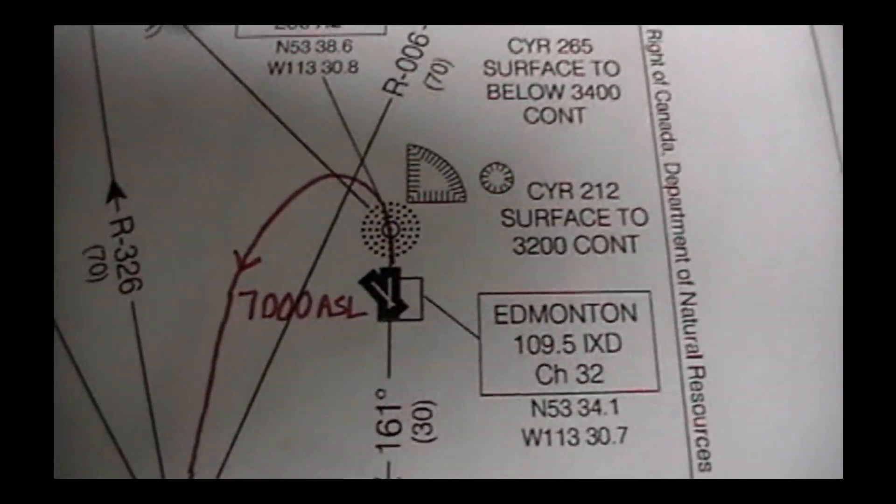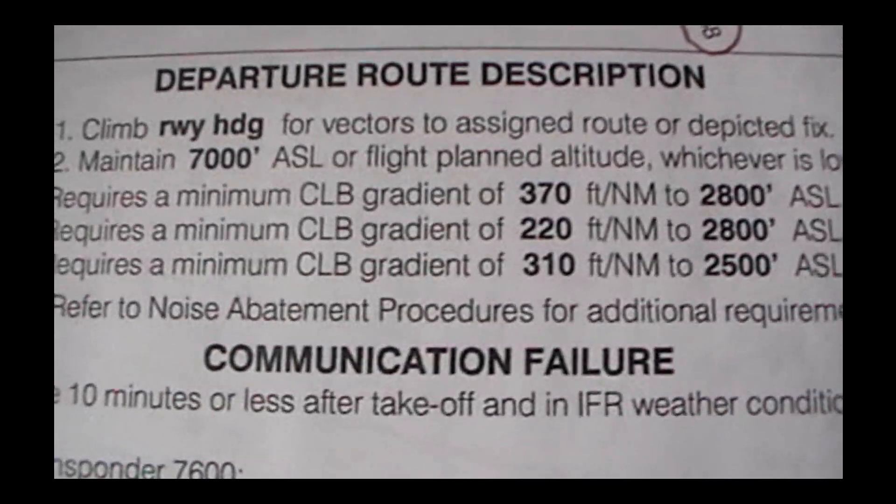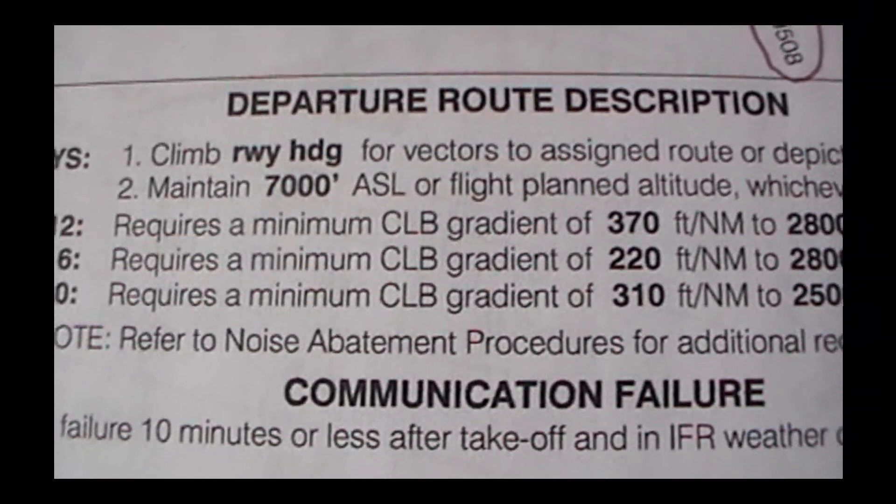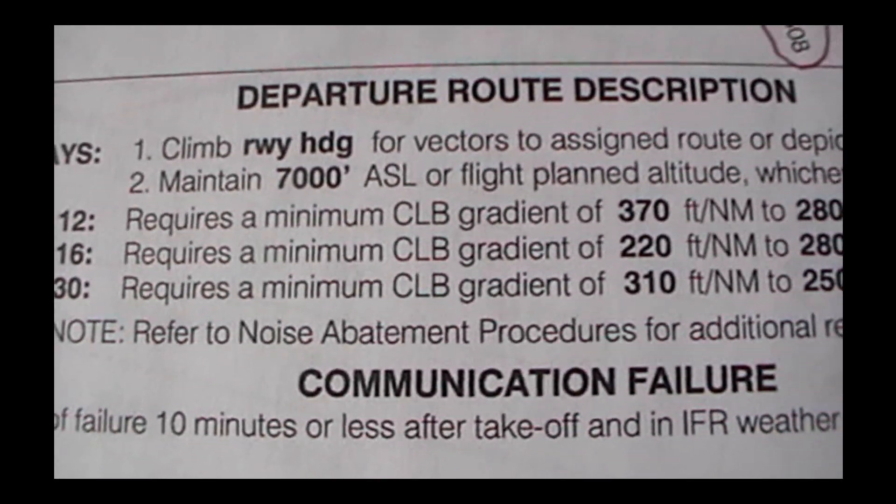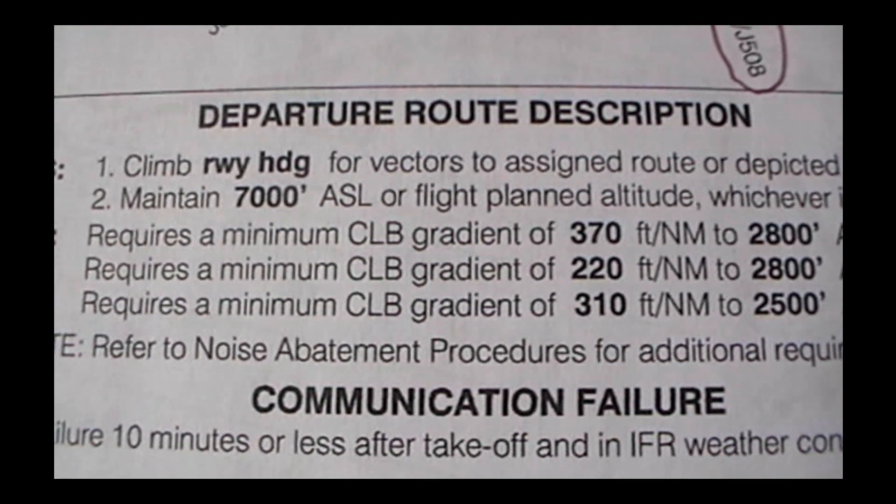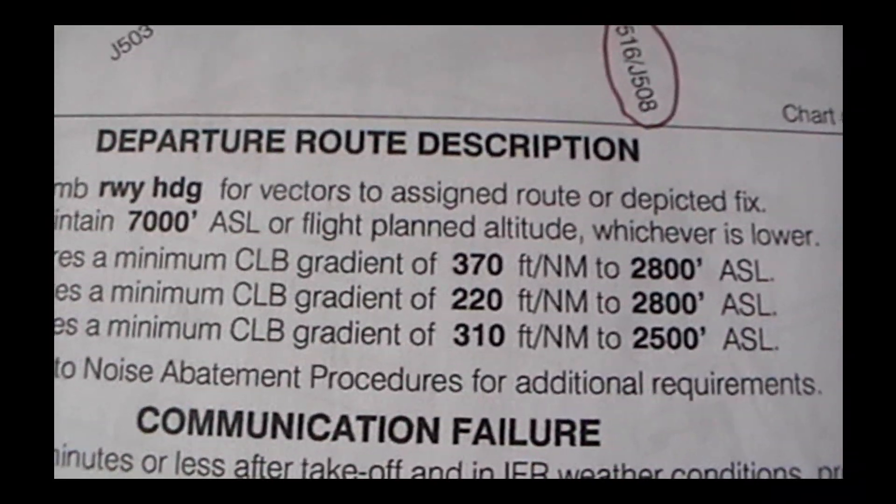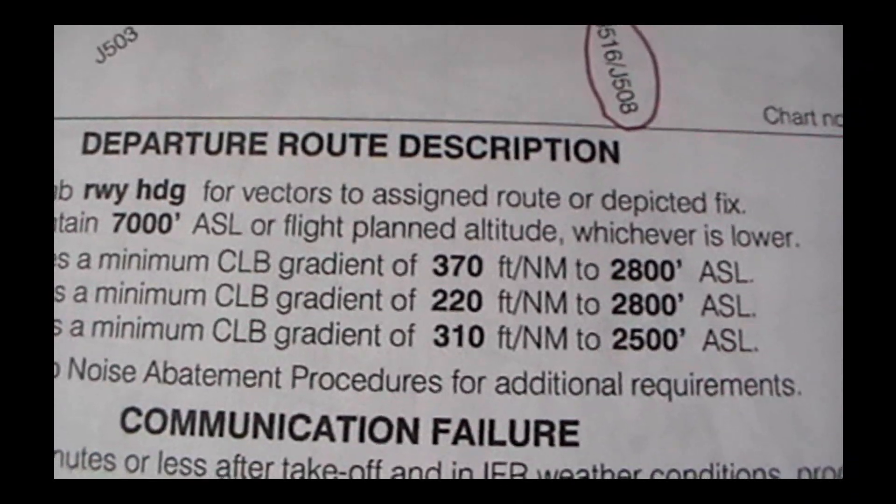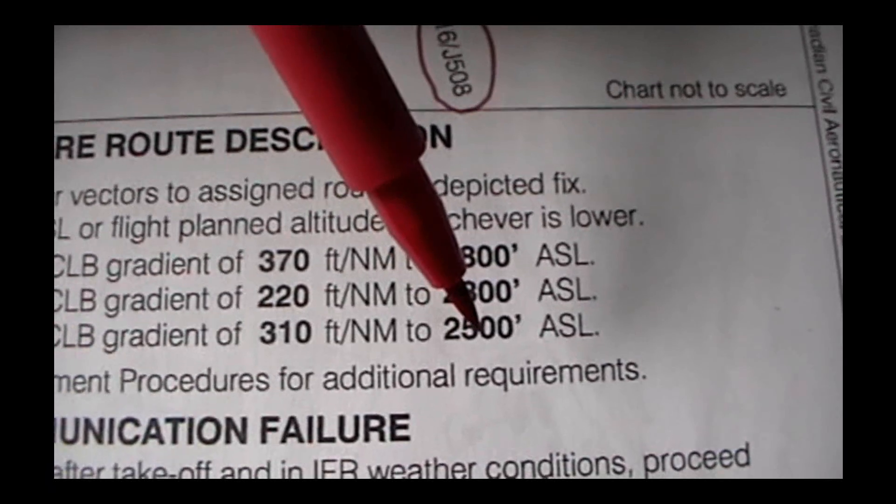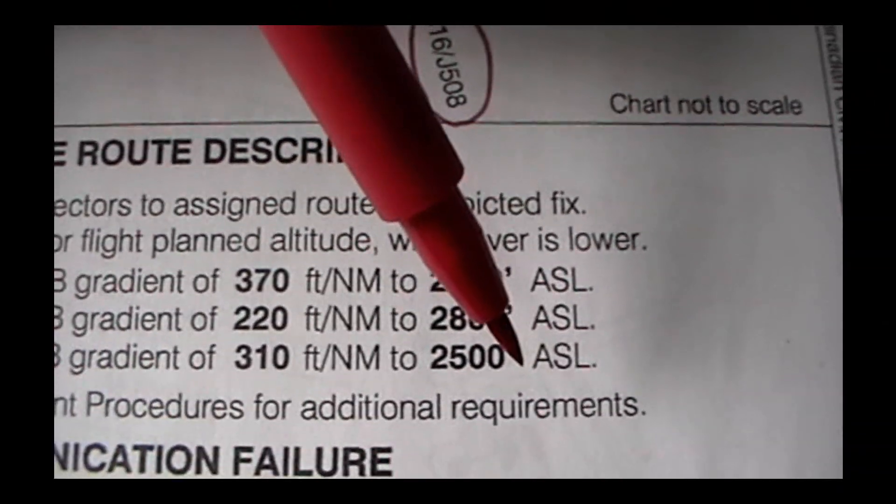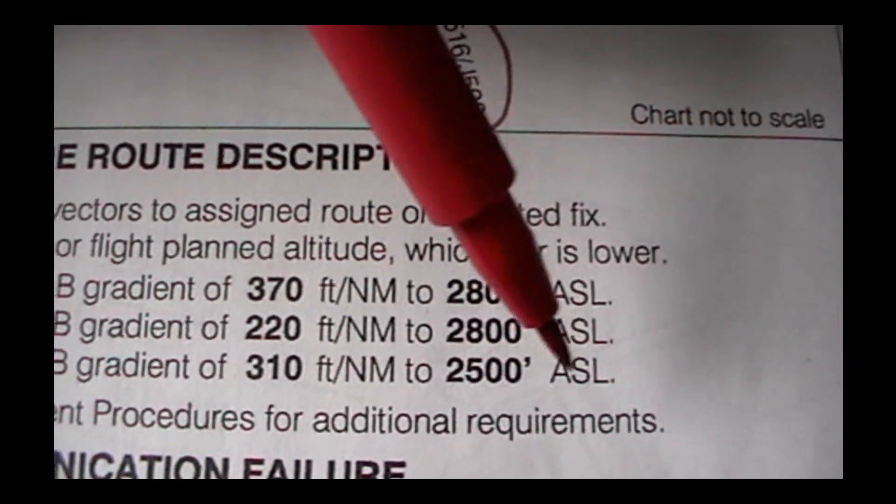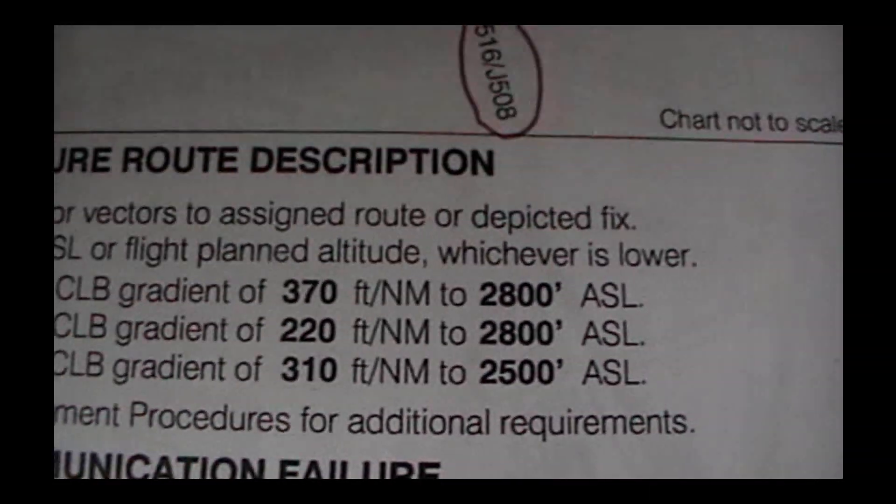Here's the information about the procedures for departure from any of the runways at this airport. It tells you how much you have to be climbing. 310 feet per nautical mile to 2,500 feet ASL. The elevation for this airport is 2,200 feet. So don't get that mixed up. 2,200 feet MSL is mean sea level. This is ASL, which is 2,500 feet above the ground.